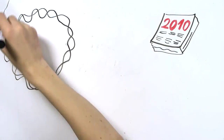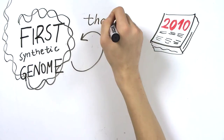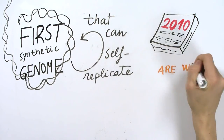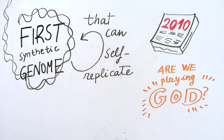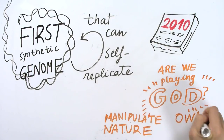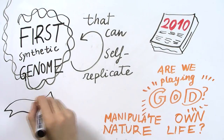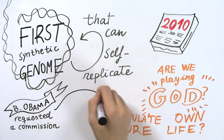In 2010, the first synthetic genome that can self-replicate was created. This breakthrough put spotlights on questions including: Are we playing God? To what extent can we manipulate nature? Who owns the synthetic life? And should we allow patenting on it? The discussion was so essential that a commission was requested by President Obama to study the implications of synthetic biology.